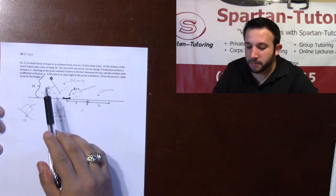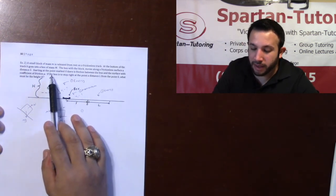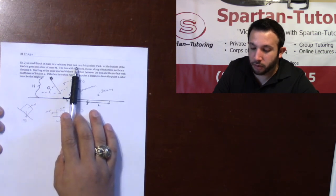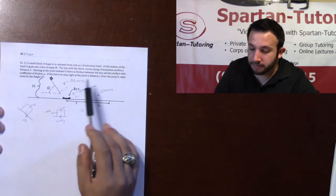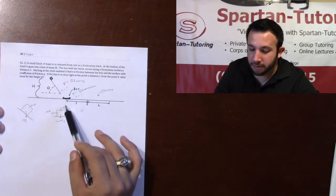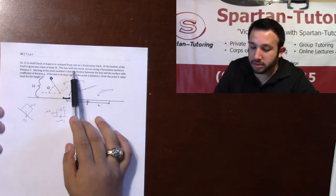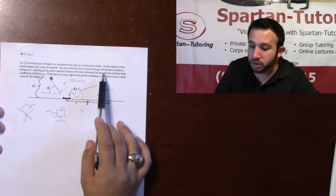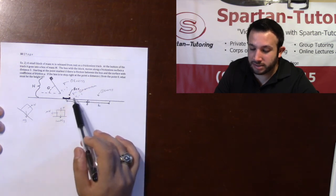So taking a look at the second one, it says that a small block of mass M is released from rest on a frictionless track. At the bottom of the track, it goes into a box of mass capital M. The box with the block moves along a frictionless surface a distance S.